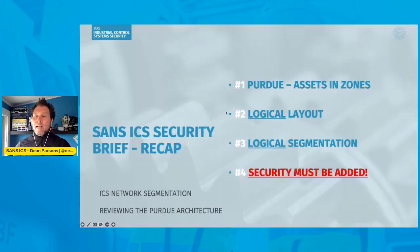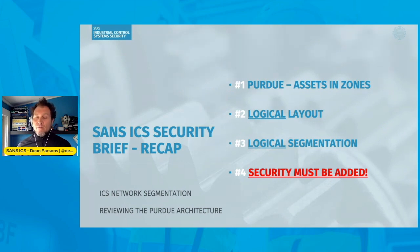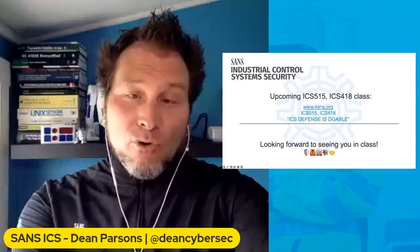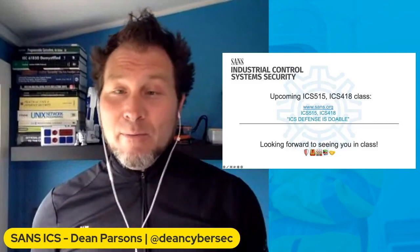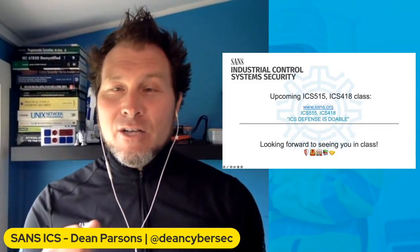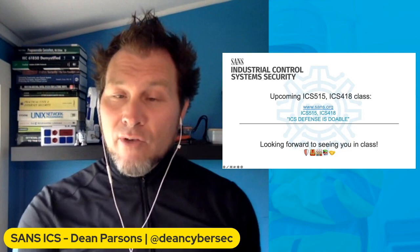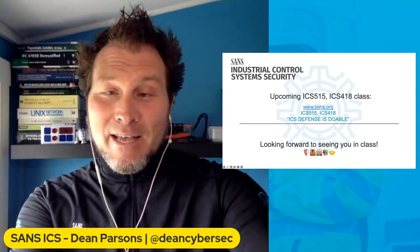To recap: the Purdue model is a great way to start logically representing your ICS devices, providing logical separation and a clear layout of devices in your control environment. But security must be added, as we've just discussed. That's all the time we have for today — great that you could spend a few minutes to go over this ICS security brief, and hoping to see you in class again soon.